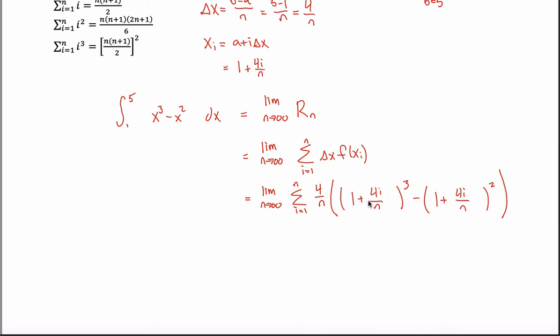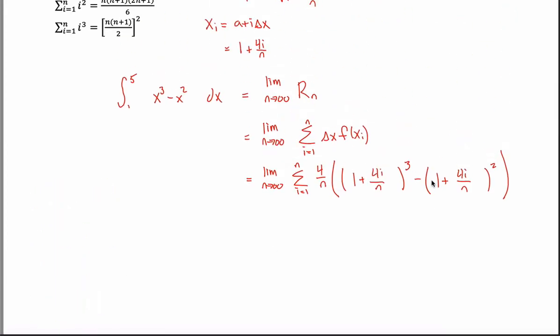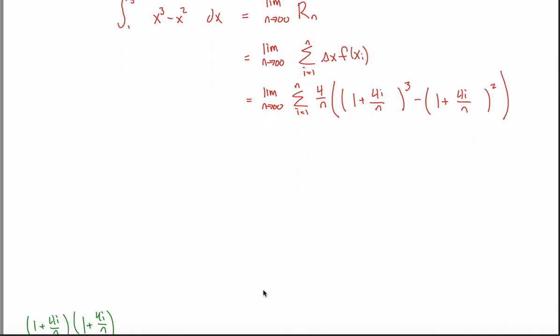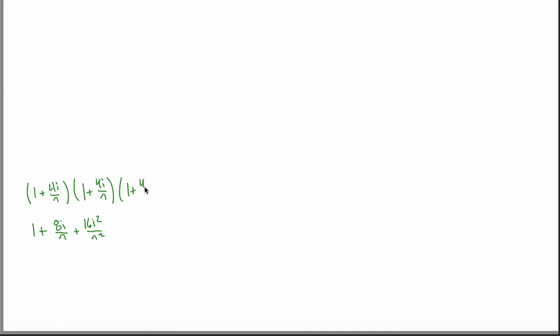And same idea over here. I got a 1 plus 4i over n. And so if I could get rid of this sigma, then I could evaluate this limit. And getting rid of this sigma, well, I'll end up using these formulas. But to use these formulas, I have to have my i, my i squared, my i cubed kind of isolated. So what I have to do is get rid of these parentheses, which is kind of a pain. There's shortcut ways to expand things that are squared or cubed. Pascal's triangle comes into play. There's some kind of cool ways you can do these. But I'm not going to bother with any of those tricks. I'm just going to go down to the bottom of my page here. And I'm going to figure out what 1 plus 4i over n times 1 plus 4i over n is.